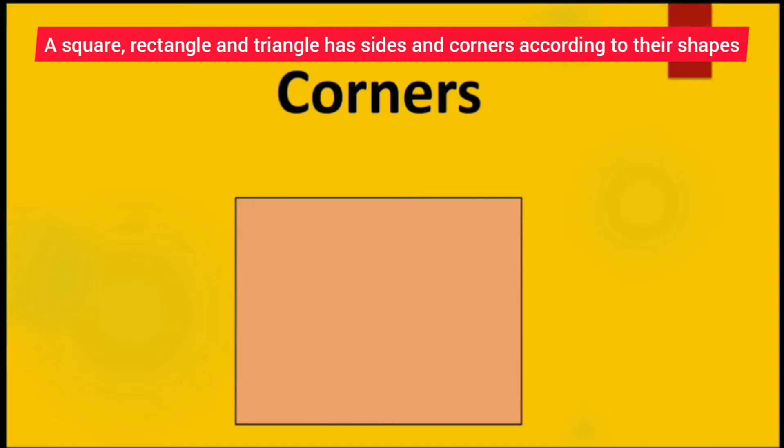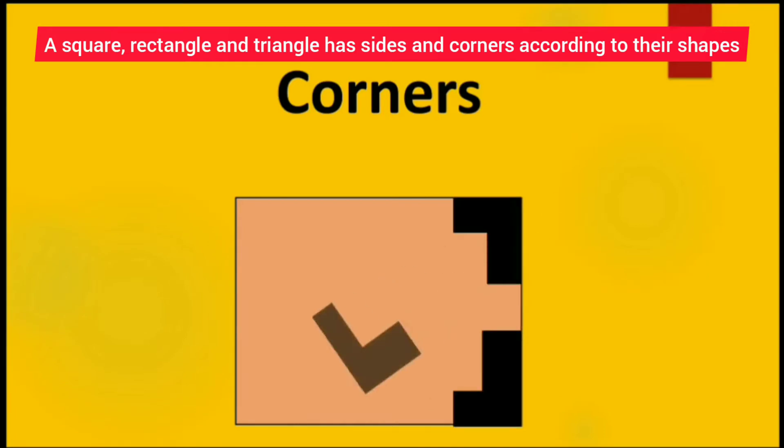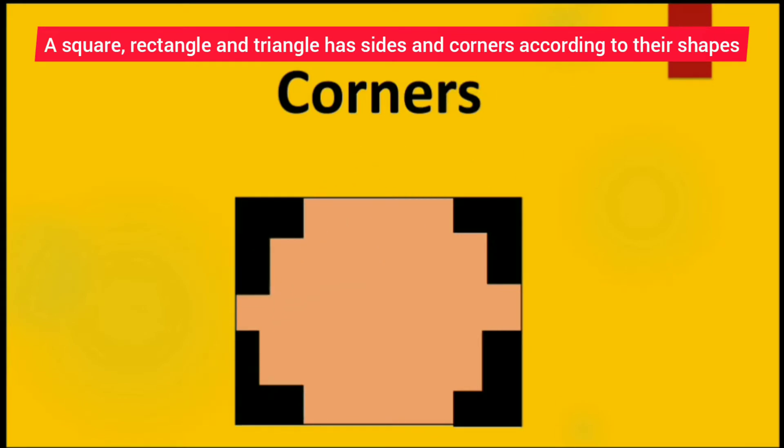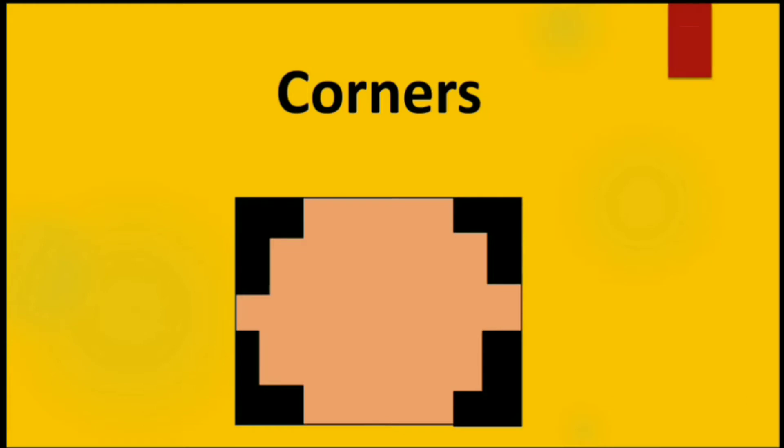Corners. Let us see how many corners does a square have. 1, 2, 3 and 4. So total 4 corners.